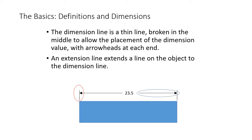The basic definitions and dimensions. The dimension line is a thin line broken in the middle to allow the placement of the dimension value with arrowheads at each end. So this is what a dimension line looks like. So here we've got this block. This blue block is 23.5 units from the line on the extension line on the right to the extension line on the left. An extension line extends a line on an object to the dimension lines. And you see how our extension lines, there's that little space down there in between that and the object. You always have to have that little space. That denotes that, hey, these lines are kind of imaginary and they're just used for measurement purposes.